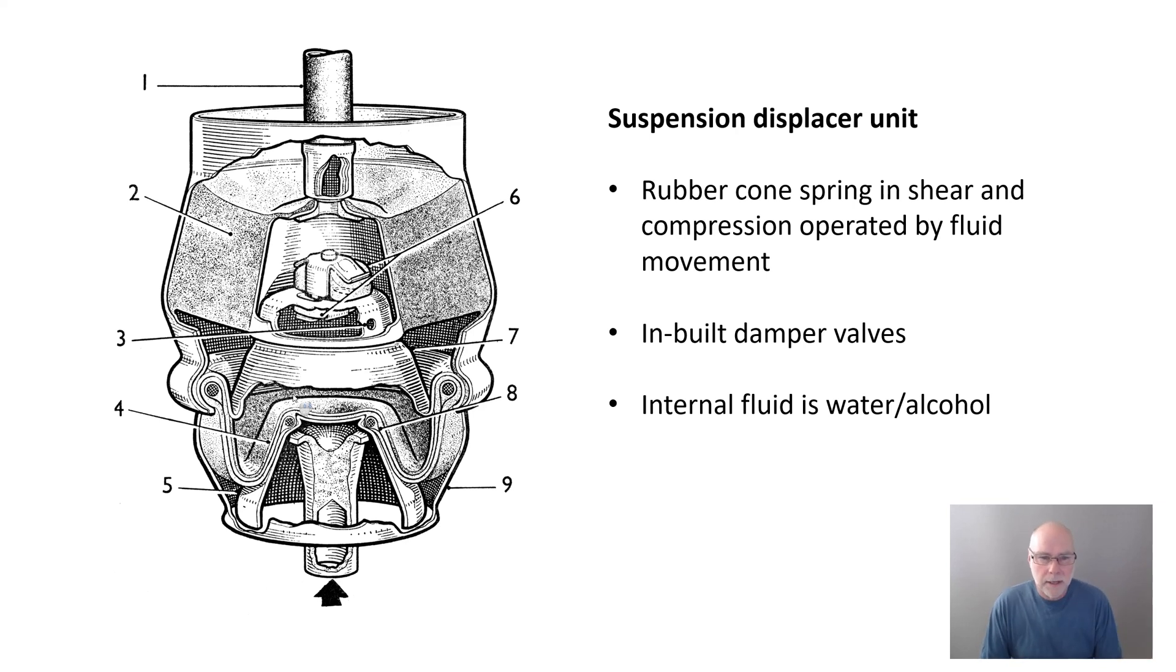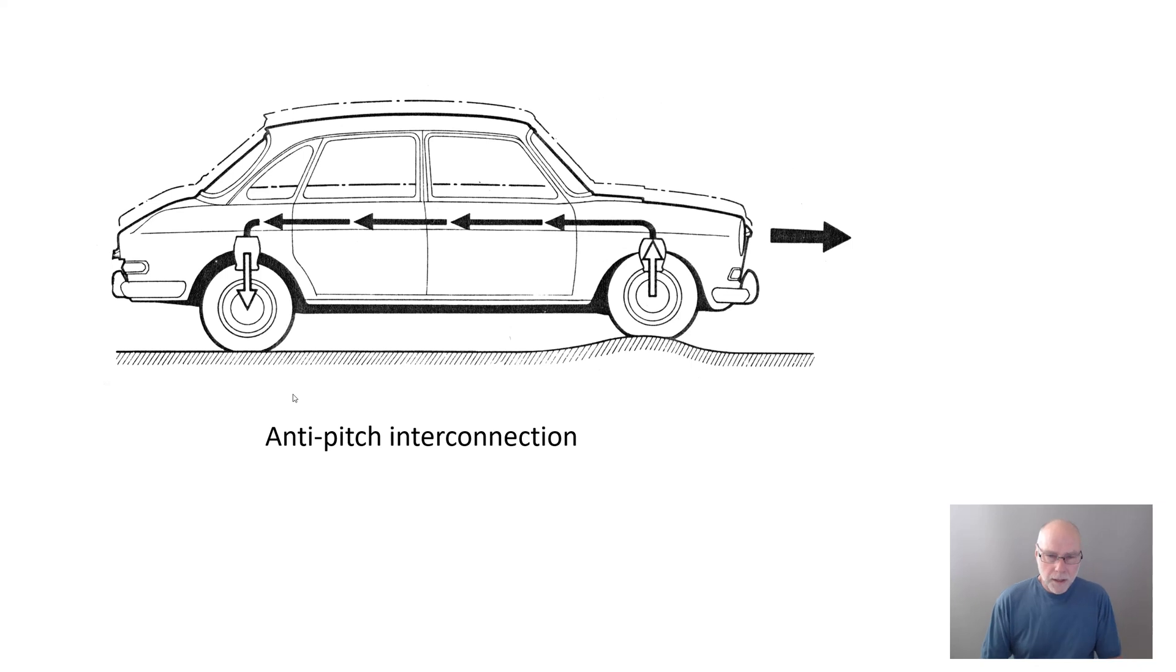There was a hose that came out of the top of that displacer unit, and it connects to a small bore pipe which connects to the displacer unit at the other end of the car. When the front goes over a bump and the front rises, fluid gets transferred to the back, pushes the rear suspension down, extending it, and so the car does not pitch.